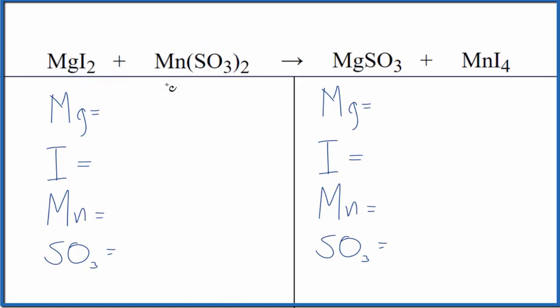First, you need to count the atoms up. We'll use a little bit of a trick here. We have one magnesium and two iodine atoms, and then one manganese, and the sulfite, this SO3, it's a polyatomic ion, we have it on both sides.